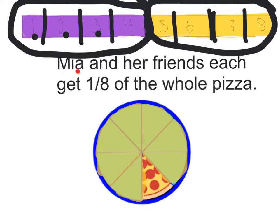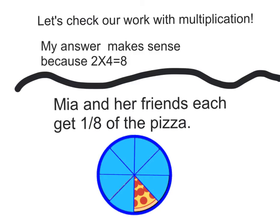So, Mia and her friends will each get one eighth of a whole pizza. Now, I'll check my work with multiplication. My answer makes sense because two times four equals eight. So, my final answer is Mia and her friends each get one eighth of the pizza.